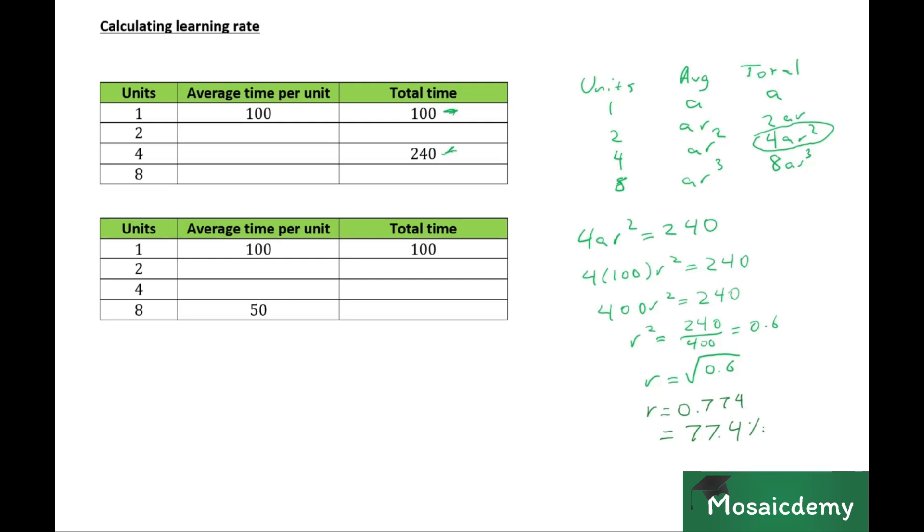Now, what if another company recorded their time? They found out that the first unit once again took 100 hours to make, but they recorded the average time per unit. And they saw that the average time per unit for the first eight units was 50.